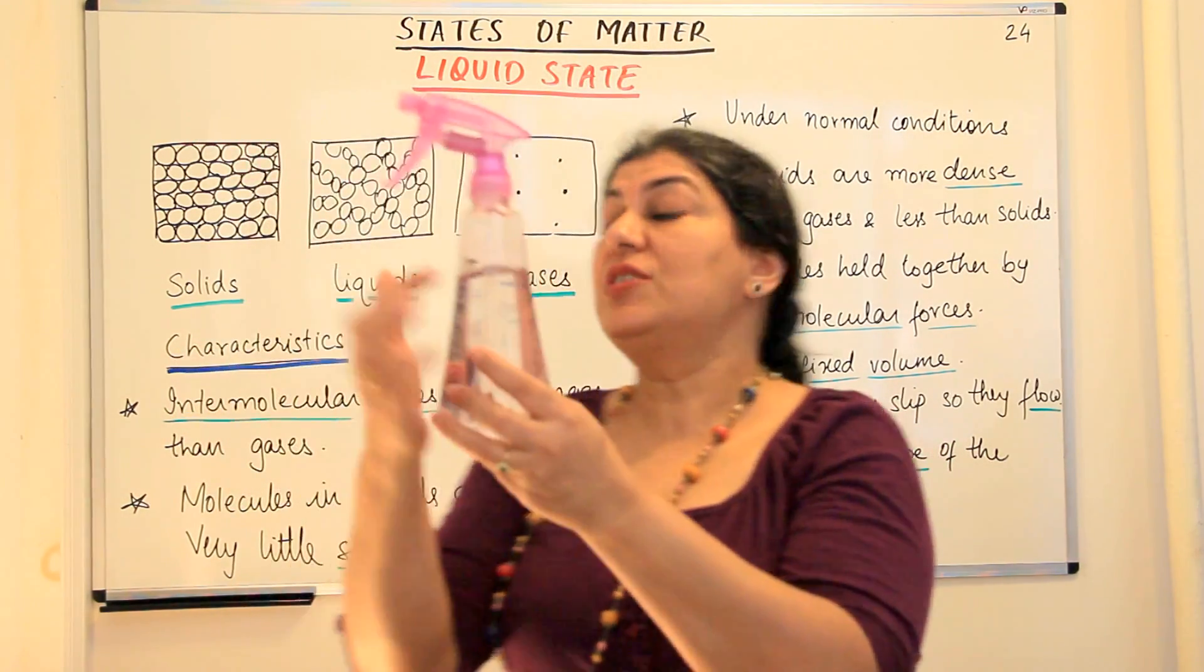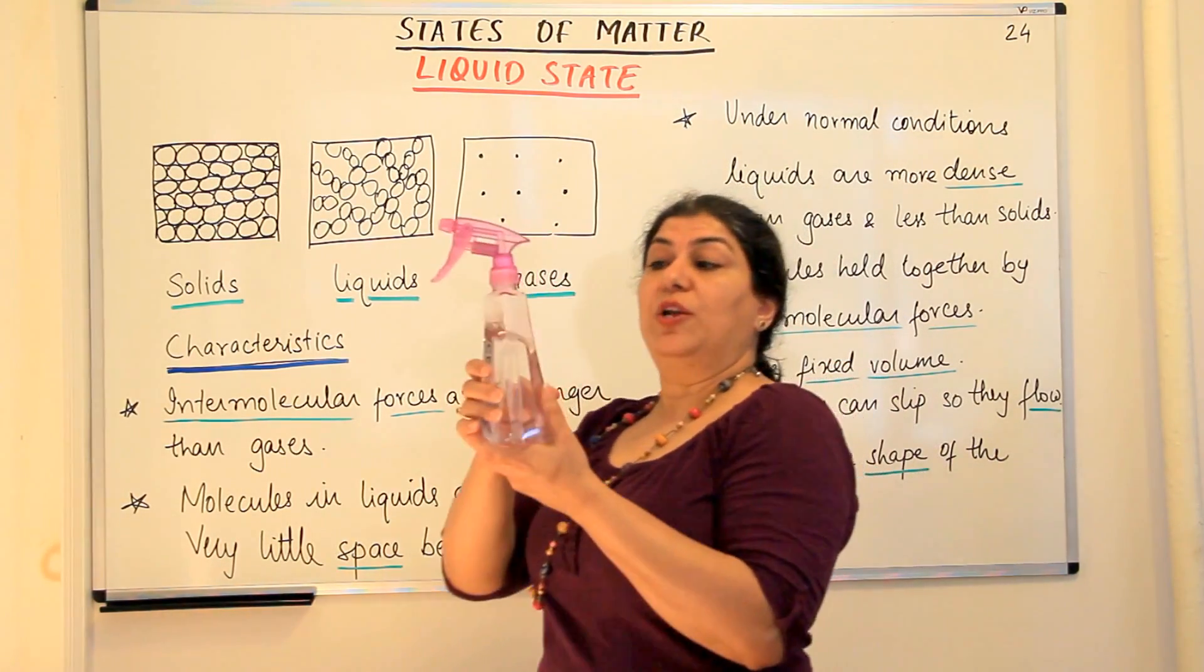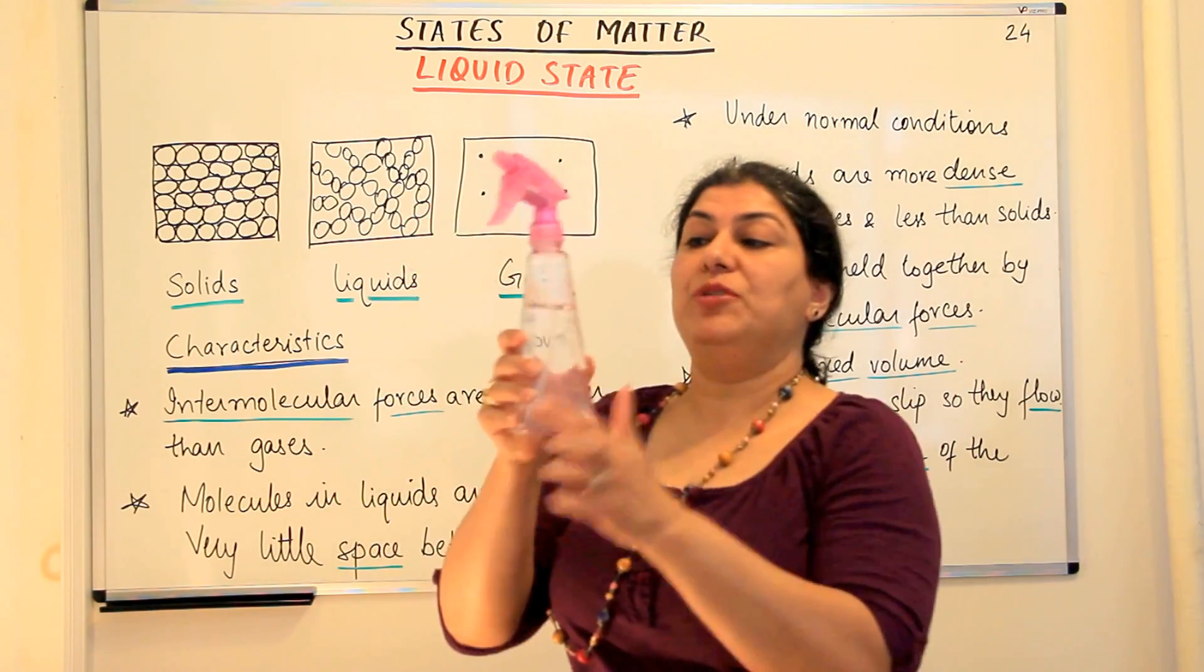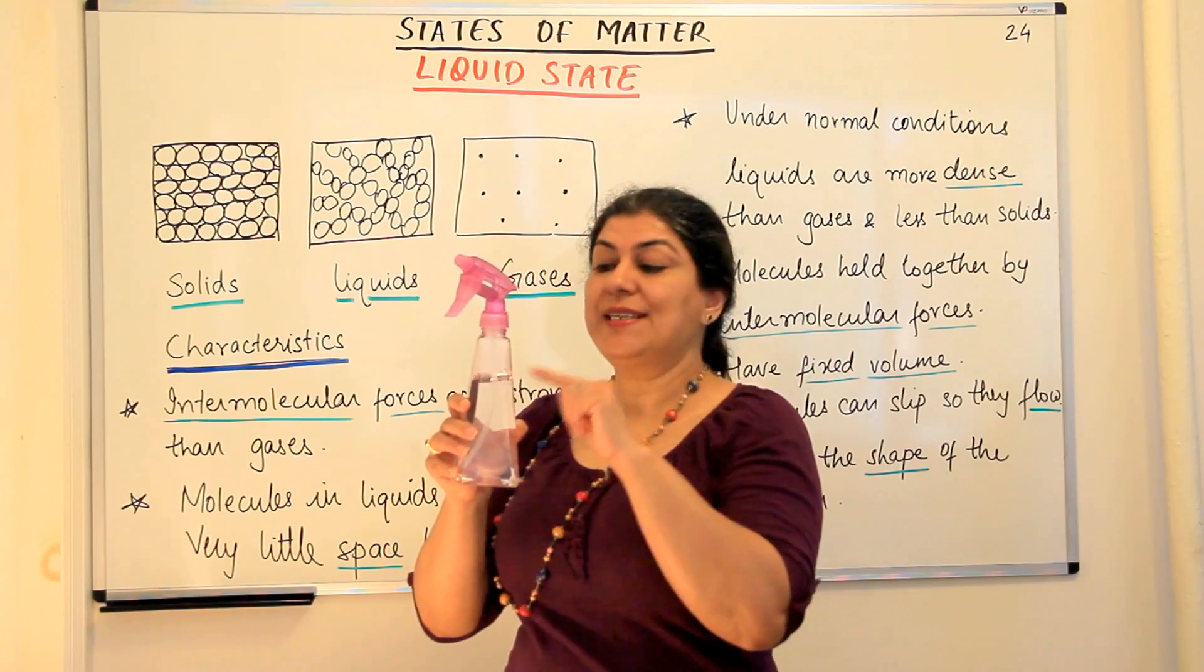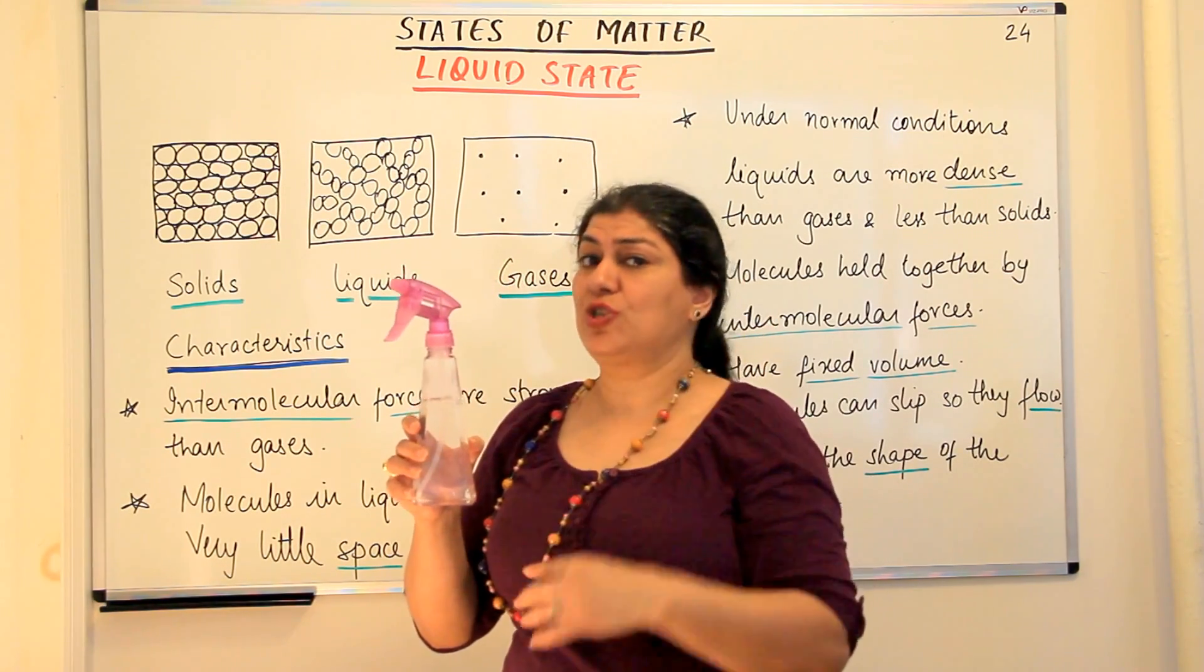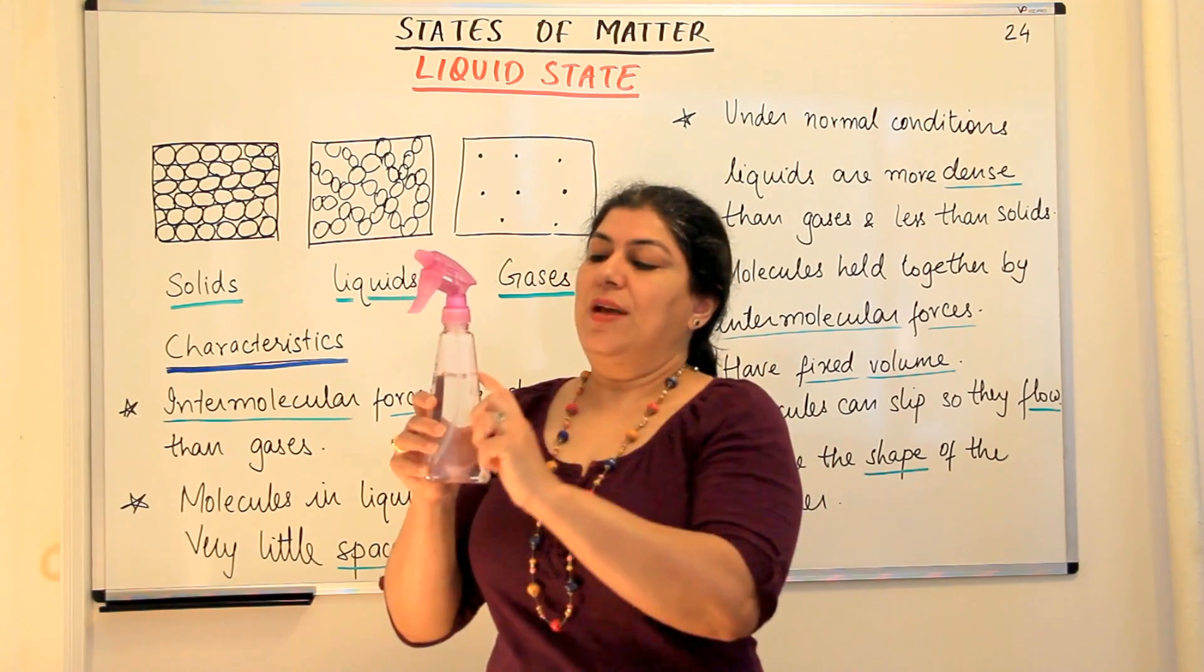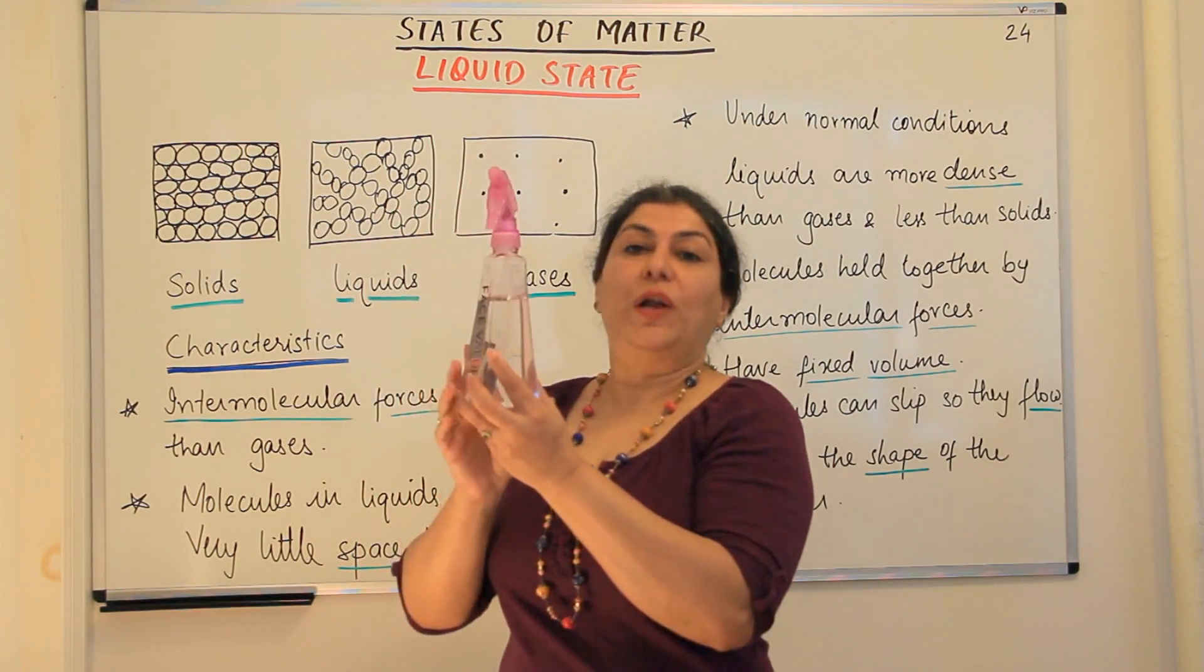So liquids have a surface and they have a surface because they have a fixed volume. If it was a gas this space would not have been empty and the molecules would have occupied the entire bottle, but since it's a liquid and intermolecular forces of attraction are strong enough to hold the molecules at one place, we find that it has a surface and it has a fixed volume.